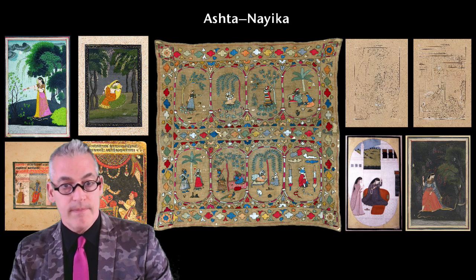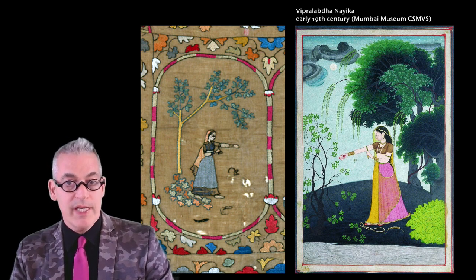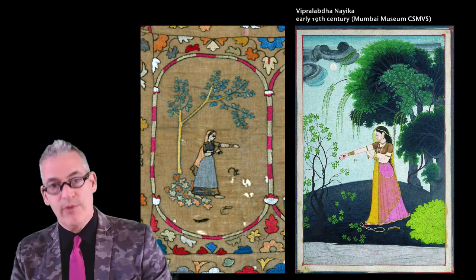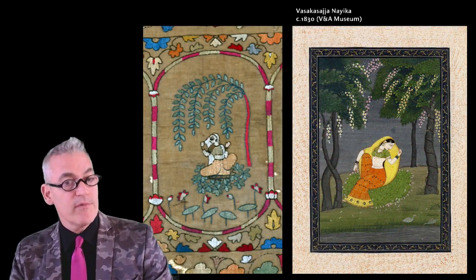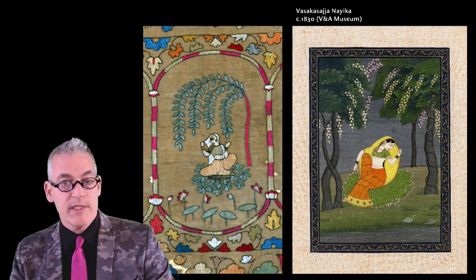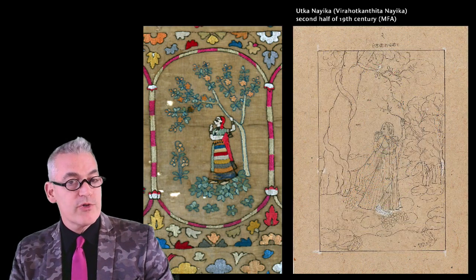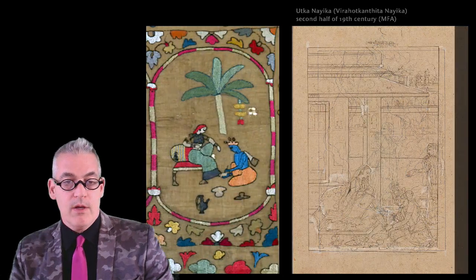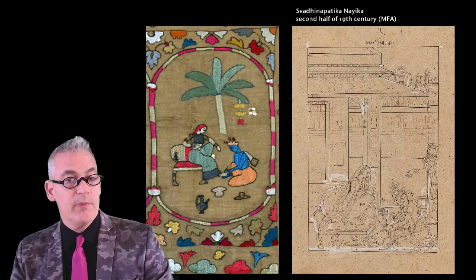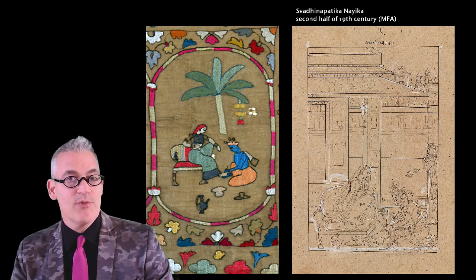Here are descriptions of each of them. The first shows one deceived by her lover, seen throwing off her jewelry in anger or despair — on the ground you can see bits of discarded jewelry. Next we have one dressed up for union, usually depicted sitting on a bed of greenery underneath a cluster of trees. We have one distressed by separation, shown grasping a branch of a tree and gazing into the distance in search of her lover. Next is one having her husband in subjection, usually illustrated with Krishna applying henna to Radha's feet.